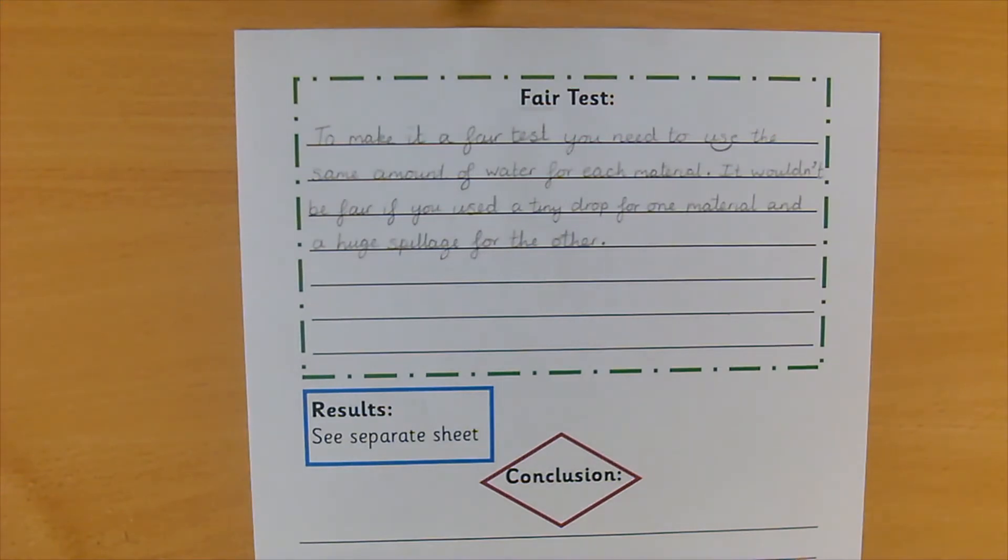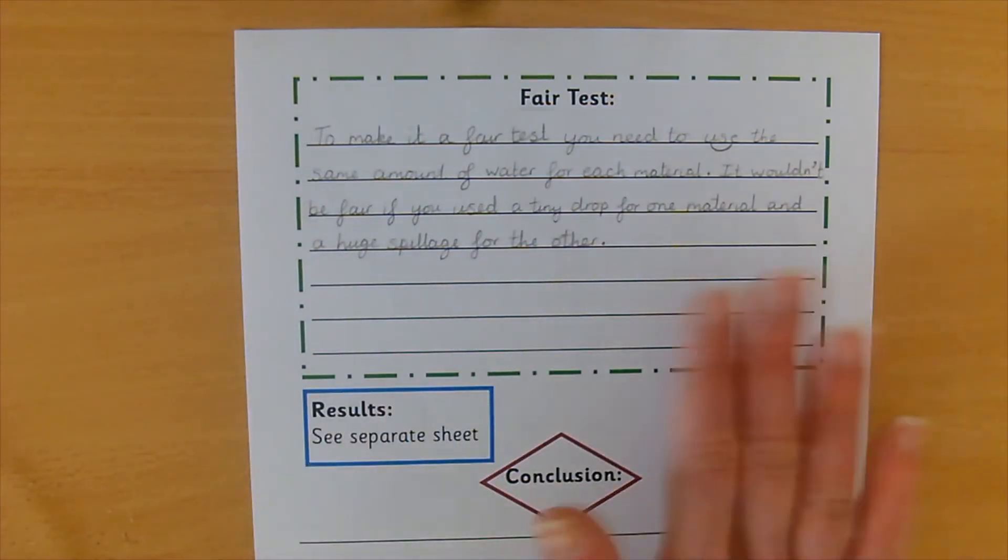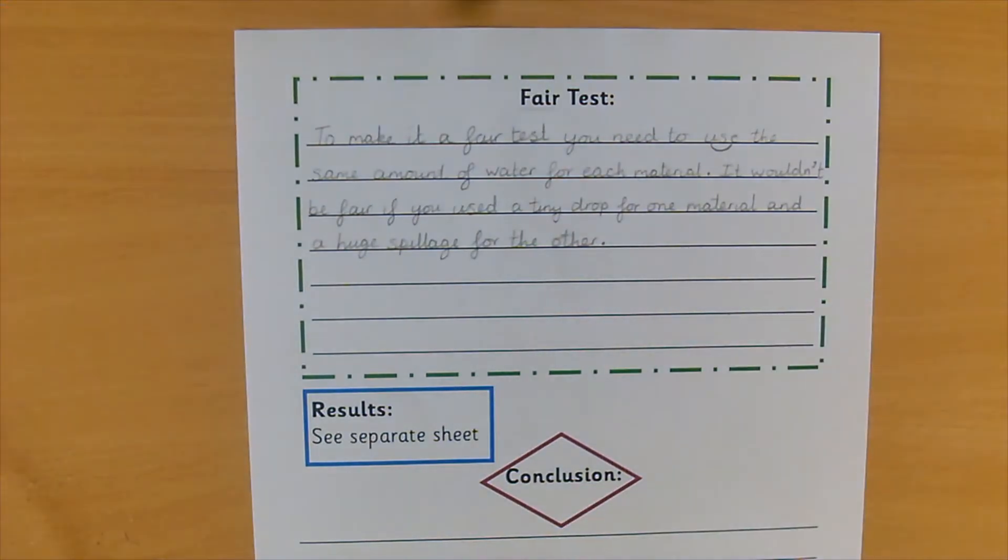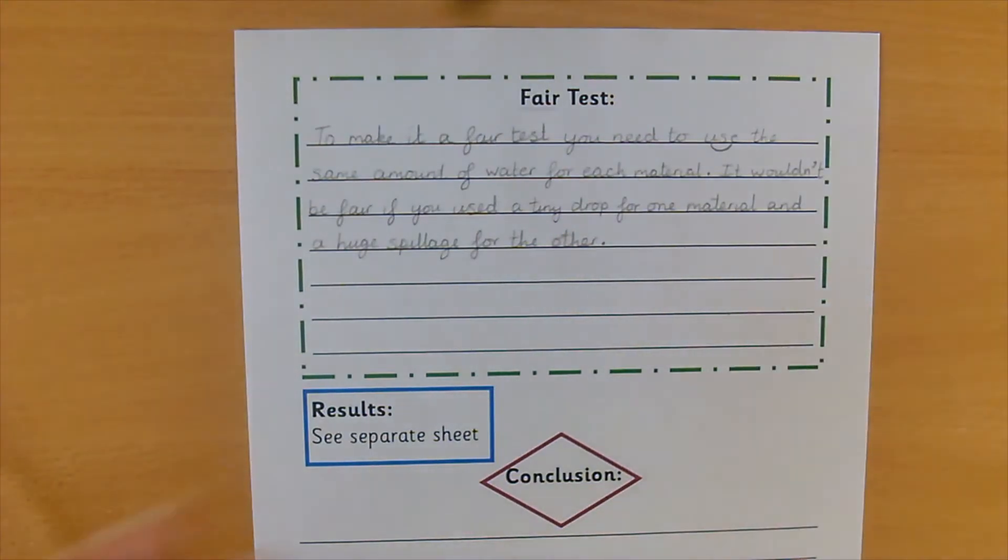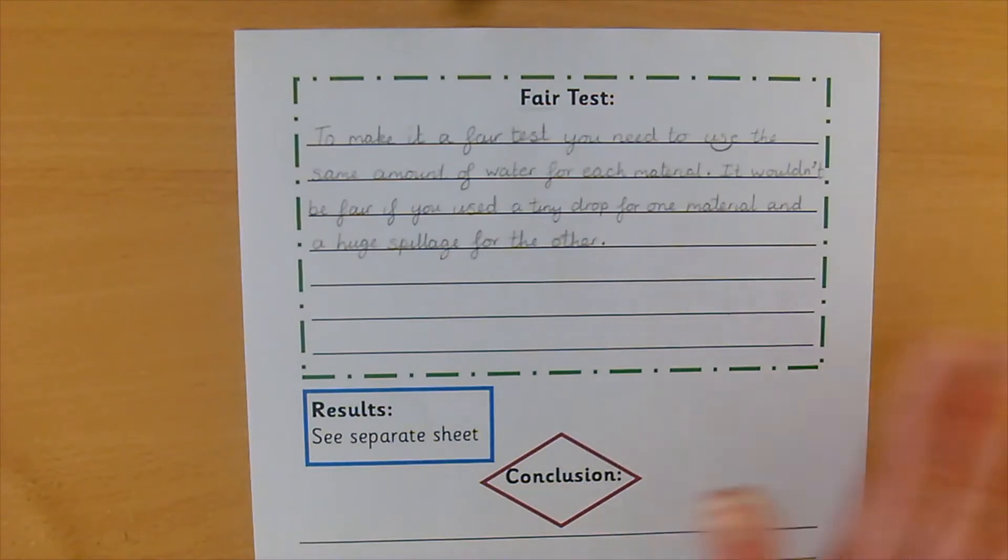So we need to keep the time the same for every material. So the amount of time you spend rubbing the water with one material, you need to spend the same amount of time rubbing the water with the next material. It wouldn't be fair if you rubbed the first material for two seconds and the second material for 30 seconds because both materials wouldn't have the same opportunity or the same chance to soak up the water in the same way. So that's what I want you to write about. You can write about keeping the time the same. So pause the video and write that now.